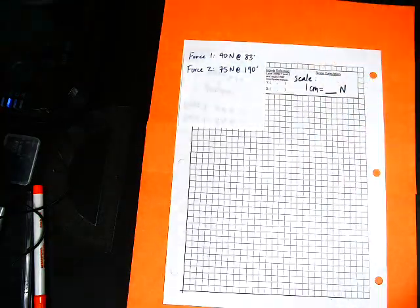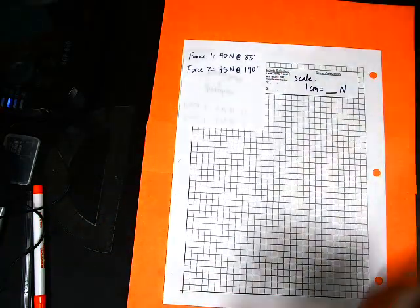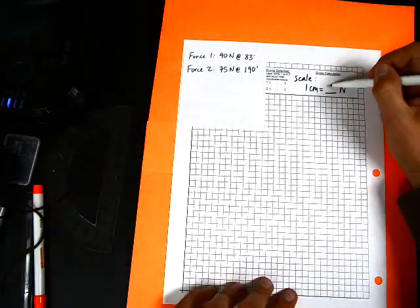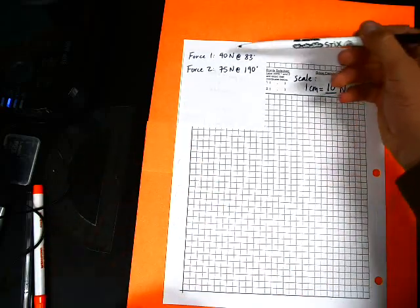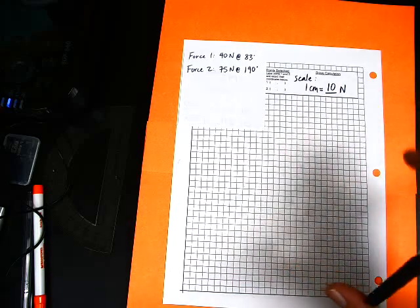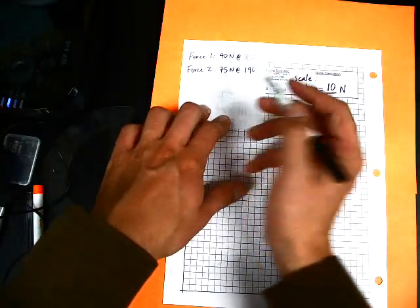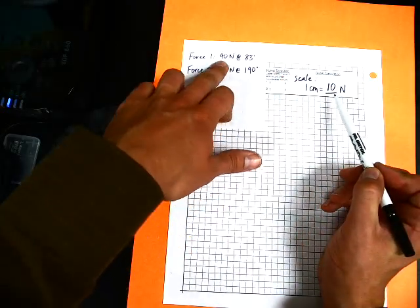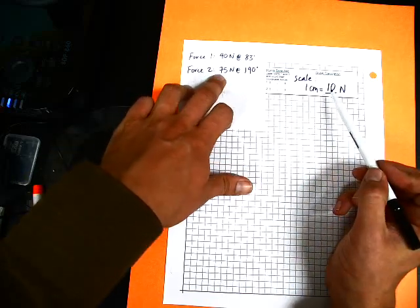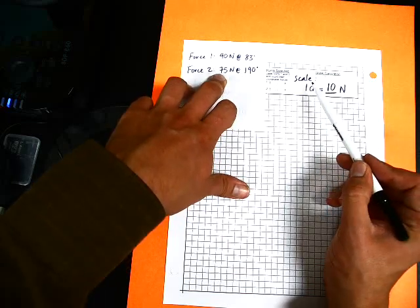In this case, if we used one equals one like the last one, we'd have to draw a 40 centimeter line. That's pretty long, don't want to do that. A good one to use for this is 10, so one centimeter equals 10 newtons. This one is 40, this one is 70. The numbers are not exact multiples of 10, but if the scale is 10, this one is 40 so it has to be 4 centimeters because 4 times 10 equals 40. This one has to be 7.5 centimeters since 7.5 times 10 equals 75.